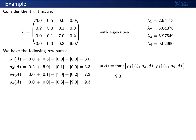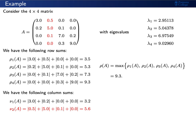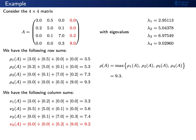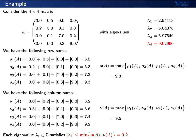Similarly, we compute the column sums: nu sub 1 through nu sub 4 are the sums over columns 1 through 4 respectively. The maximum column sum, nu of A, is 9.2. The theorem states that each eigenvalue satisfies: its absolute value is less than or equal to the minimum of rho of A and nu of A, so less than or equal to 9.2. Indeed, the largest eigenvalue is lambda sub 4, approximately 9.03, which in absolute value is less than 9.2 — a fairly good estimate.